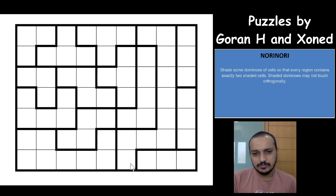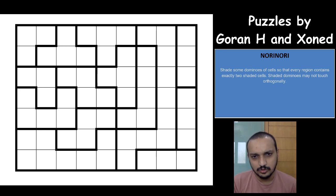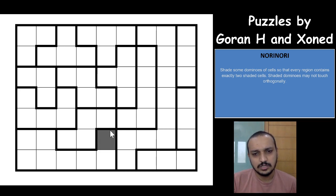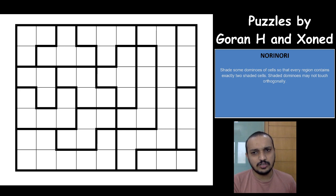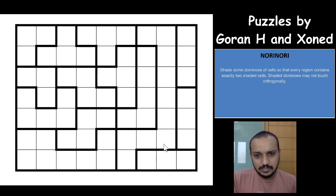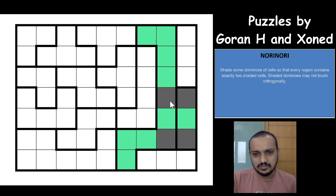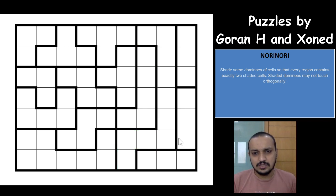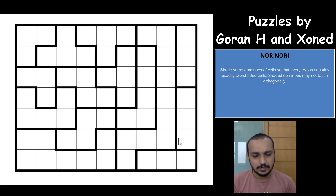Nori Nori is a really fun genre — I really love solving Nori Nori puzzles and the logic behind the puzzle genre is really amazing. Before going to the puzzle, let's see the rules: you need to shade some dominoes. Dominoes are two cells touching each other, in such a way that every region contains exactly two shaded cells. Shaded dominoes cannot touch each other orthogonally. It is not necessary that both shaded cells are in the same region — they can be from different regions, and both regions get fulfilled.